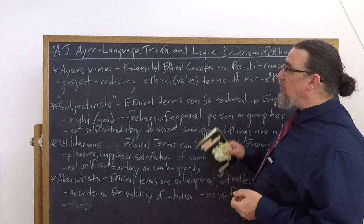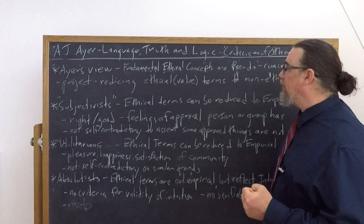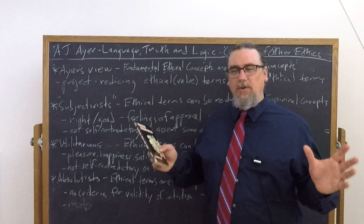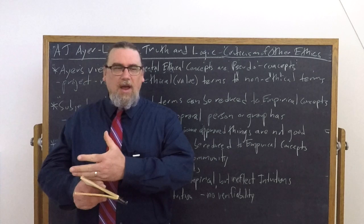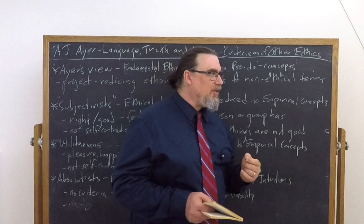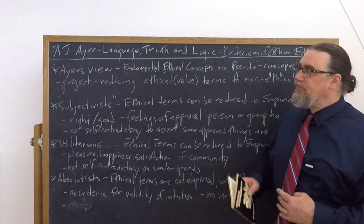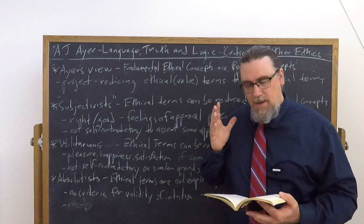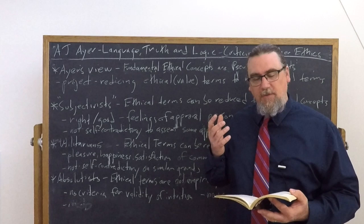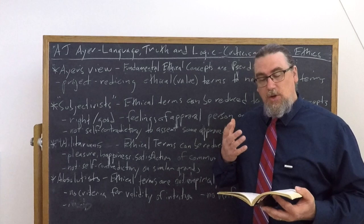And he thinks that the other approaches in ethics have gone wrong largely by thinking that they're not dealing with pseudo-concepts or pseudo-propositions. So he talks about this project of reducing ethical or value statements and terms to non-ethical terms. This is a very common project, not just in ethics, but in metaphysics and in all sorts of other language as well, trying to reduce things down to a set of basic concepts that would all be on the same level. So Ayer thinks that this is really going to turn out to be impossible. He tells us that this notion that ethical terms can be reduced or translated into non-ethical terms is a contention of two sets of ethical philosophers, those who are commonly called subjectivists, those who are known as utilitarians.